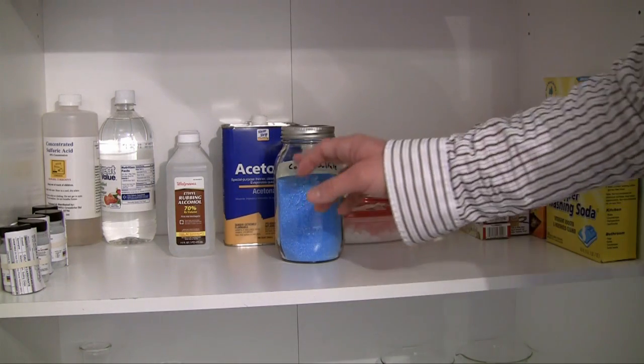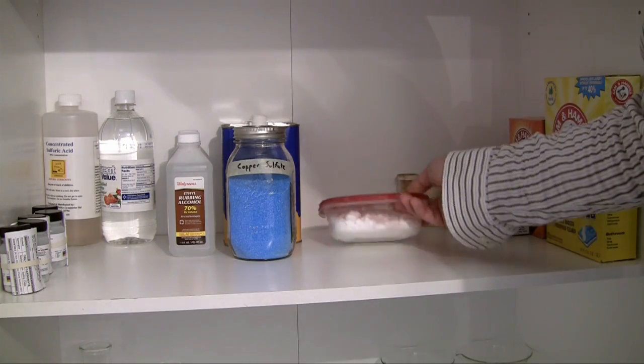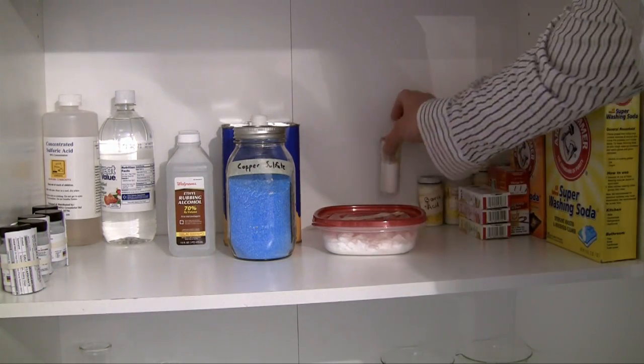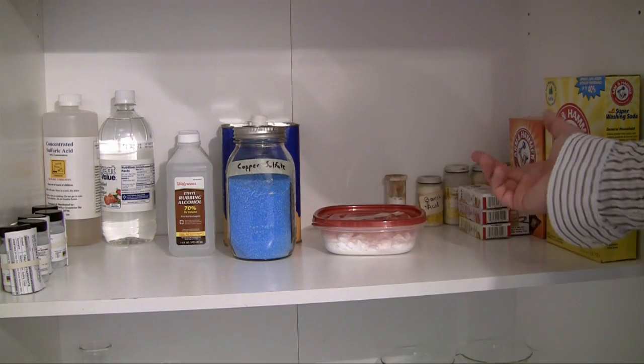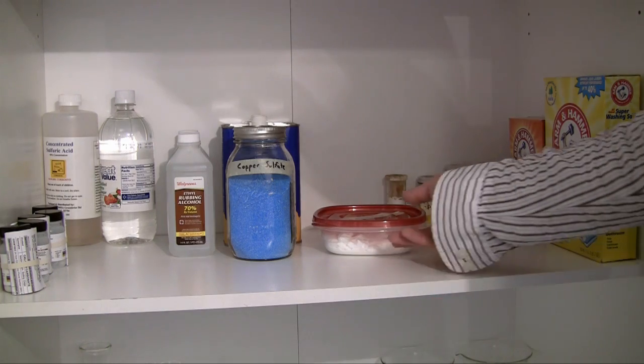Another thing, of course make sure to label everything. A lot of these chemicals look the same. For example this potassium chlorate and boric acid they pretty much look the same as baking soda so if they weren't labeled it would just be a guessing game. Not very good.